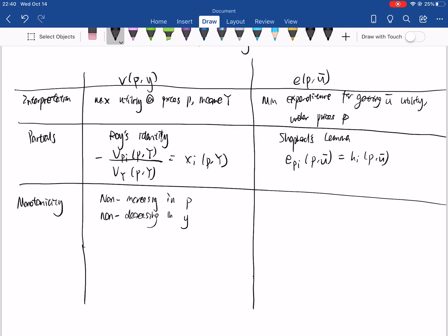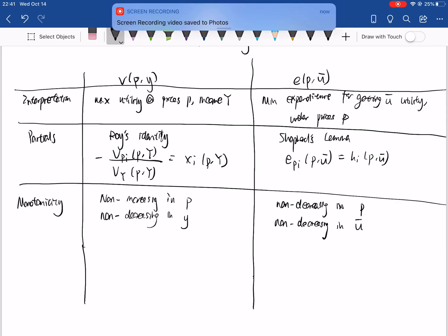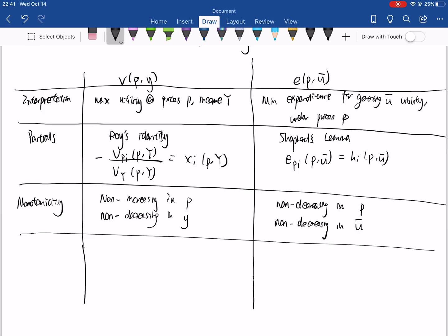Similarly for the expenditure function, it is non-decreasing in p. That's because for a higher level of prices, I have to spend more money to get that same level of utility. And it's also non-decreasing in u-bar, which means that if I want to hit a higher level of utility, I would need to spend more or the same. Notice we're saying non-increasing instead of decreasing because there's a potential it could be the same.